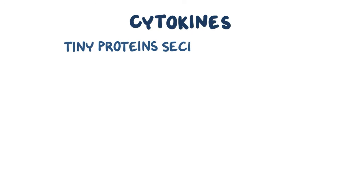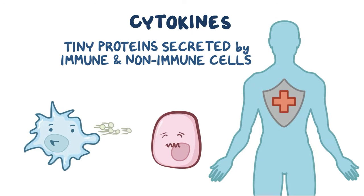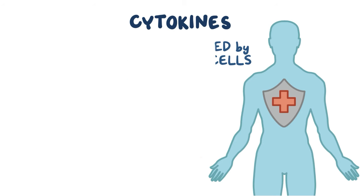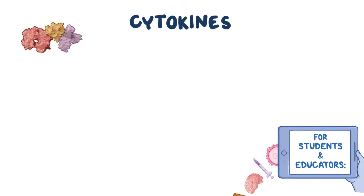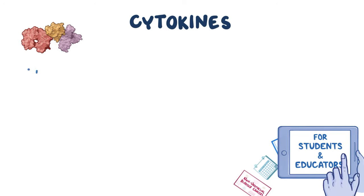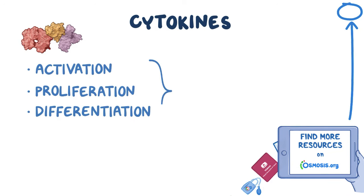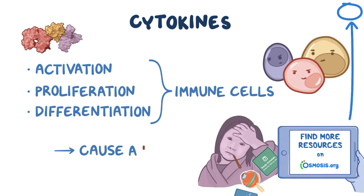Cytokines are tiny proteins that are secreted by both immune and non-immune cells to communicate with one another. Cytokines bind to receptors and trigger a response in the receiving cell. Oftentimes, cytokines promote activation, proliferation, and differentiation of immune cells, but they can do other things like help increase the body temperature, causing a fever.